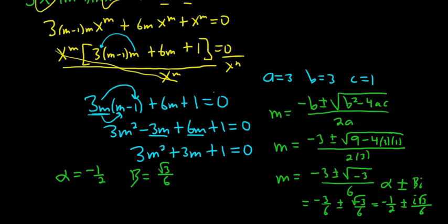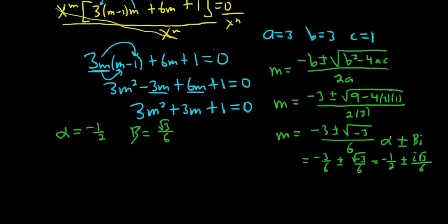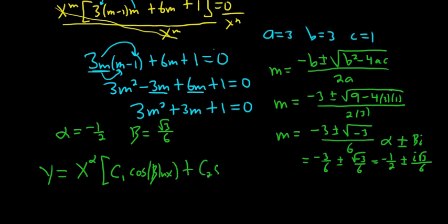So let's go ahead and write the answer out. So the form for this is y equals x to the alpha bracket c1 cosine beta ln x plus c2 sine beta ln x.